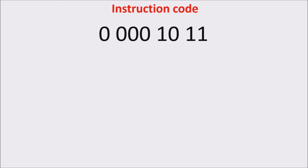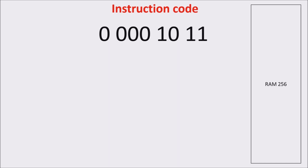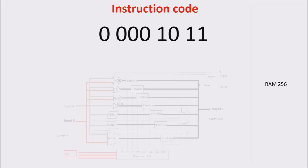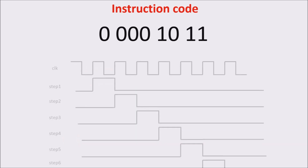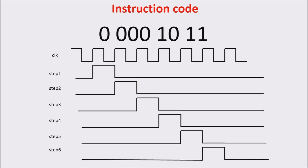Remember, we have already built some important components of SCOT CPU: the RAM memory, the ALU, and we are building the control unit. At the heart of the control unit there is the stepper, which gives the right sequence to all the operations. As we saw in the previous video, we have six steps.